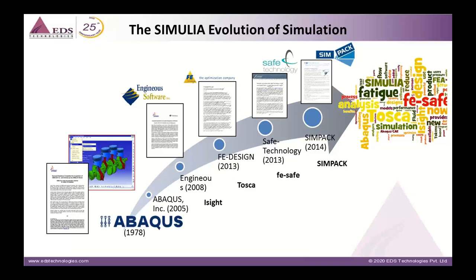Looking at the power of portfolio — going back to the beginning of Abaqus, it was founded by three founders in 1978 in Rhode Island, USA. Abaqus was later acquired by Dassault Systèmes in 2005 to become the realistic simulation brand called Simulia. Since then, Abaqus technology has undergone a significant evolution, and the simulation brand has evolved as well.